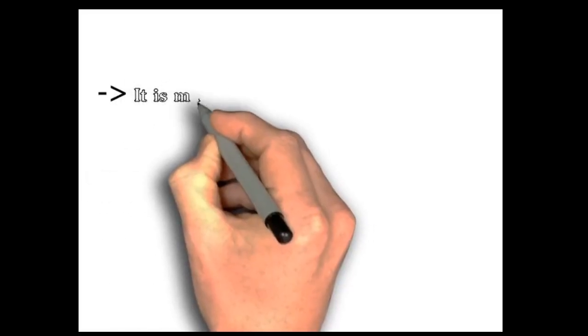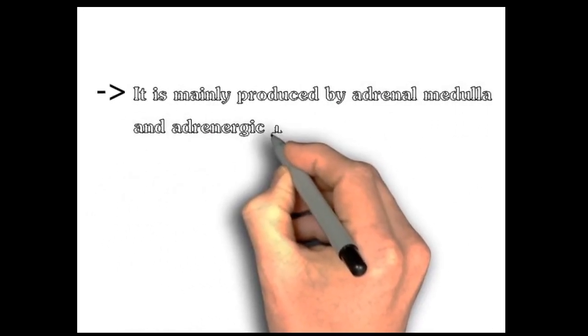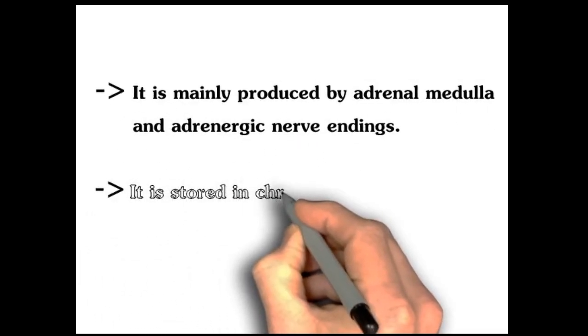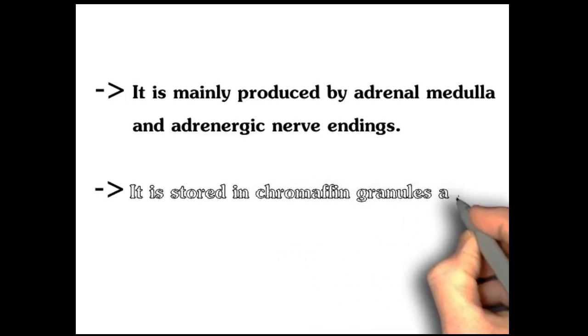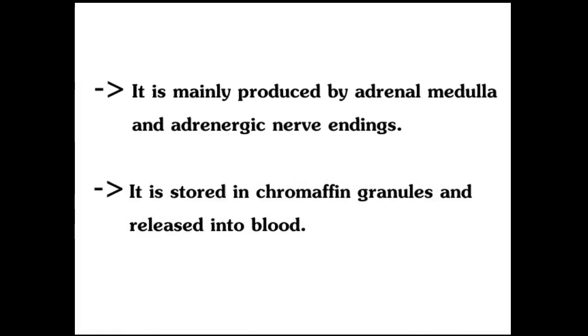Epinephrine is mainly produced by the adrenal medulla and adrenergic nerve endings. It is stored in chromaffin granules and released into the blood.